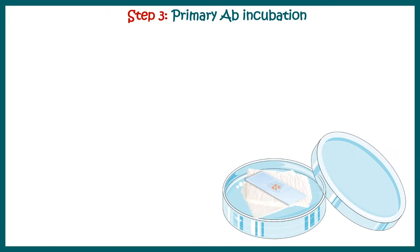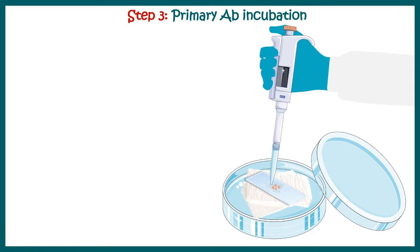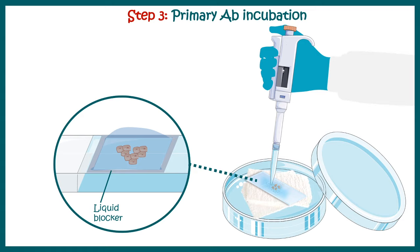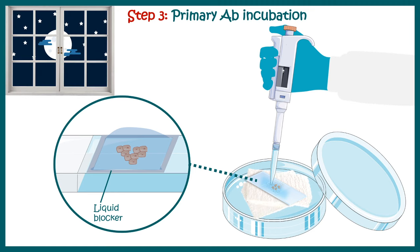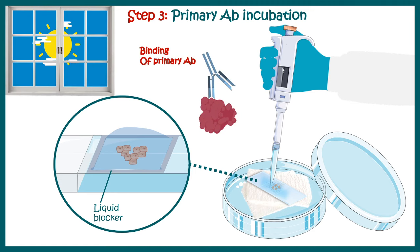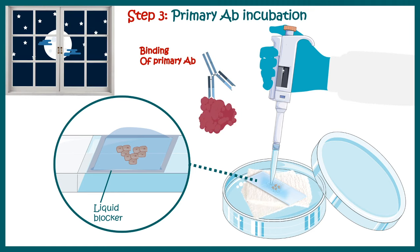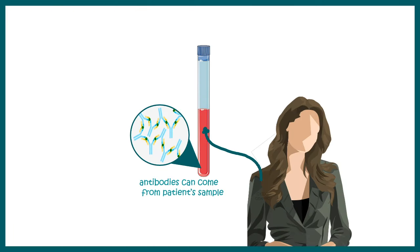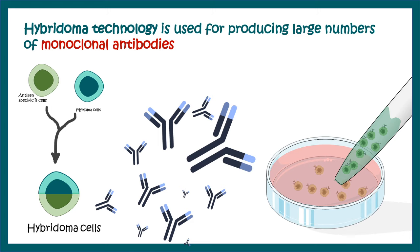Next, primary antibody incubation is performed. Antibodies are added on the slide, generally using a liquid blocker pen to draw a mark, and the antibodies are added within that area. This step is performed overnight, during which the primary antibodies bind to the antigen. The primary antibody can come from a patient sample in clinical settings, or in biomedical research scientists create monoclonal antibodies against a specific protein of interest.